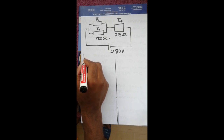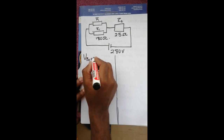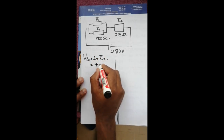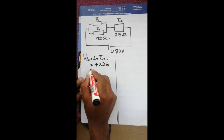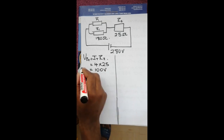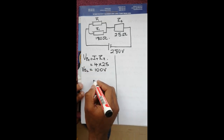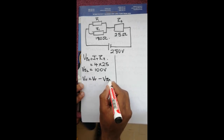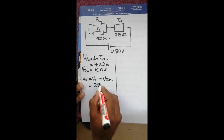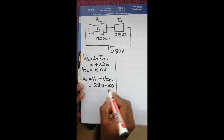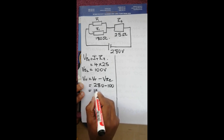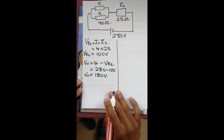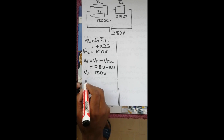V_R2 equals I_T times R2, which is 4 times 25, and this gives us 100 volts. Then V_parallel equals V_T minus V_R2, which is 280 minus 100, and it gives us 180 volts.